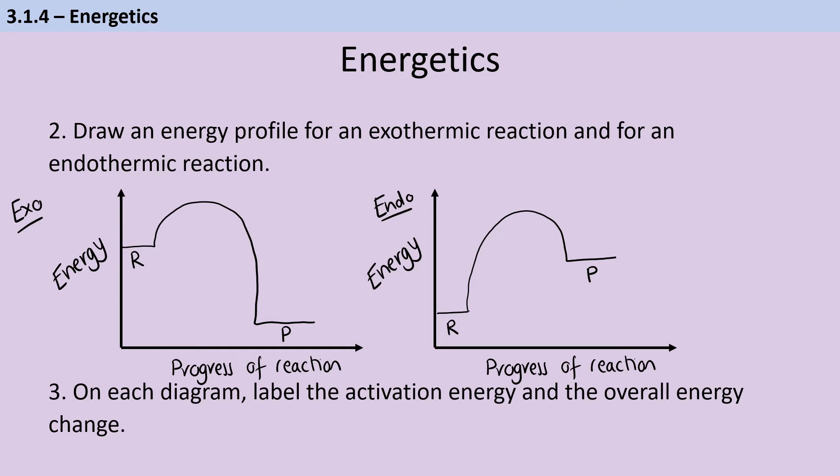On each one of these diagrams, we can label the activation energy. That's the amount of energy that the chemicals need to have when they collide in order for that collision to be successful and a chemical reaction to take place. This is labeled from the height of the reactants up to the peak, that point we often call the transition state.